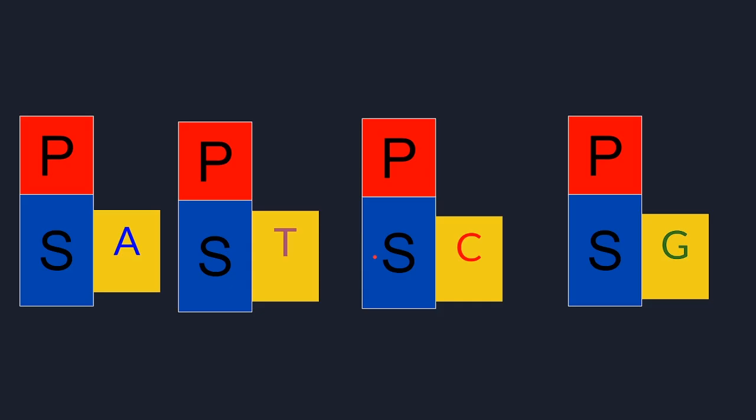Ito siya, phosphate group, the sugar, and the nitrogenous base, which is the adenine, thymine, cytosine, and guanine.